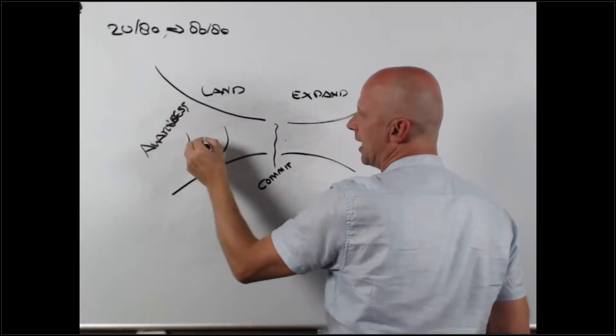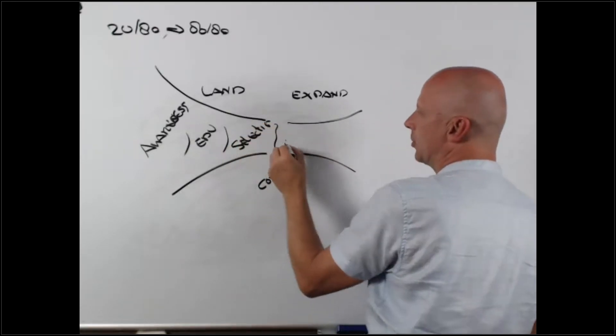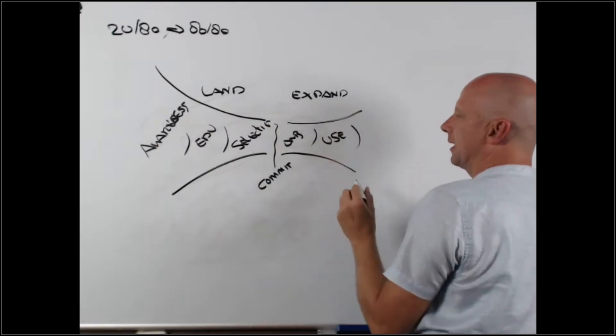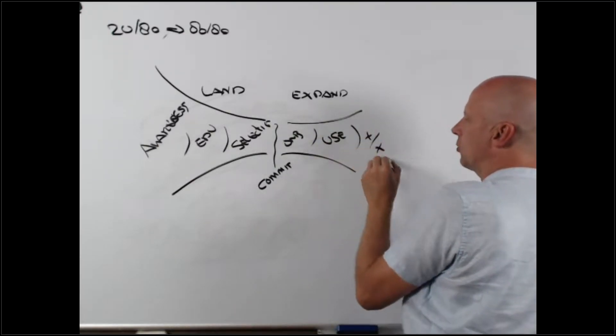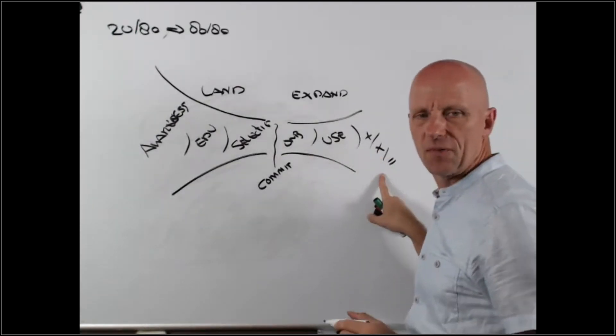Awareness, education, selection. Then we do onboarding, customer starts to use it, and guess what we do after that? We grow. We upsell, cross-sell, or renew. Three things: upsell, cross-sell, renew.